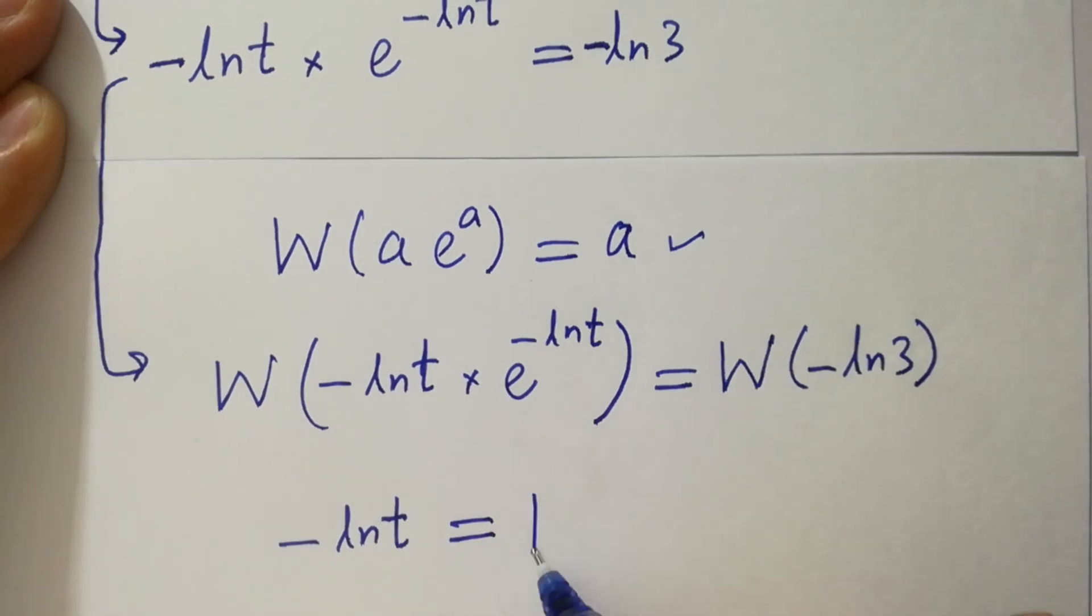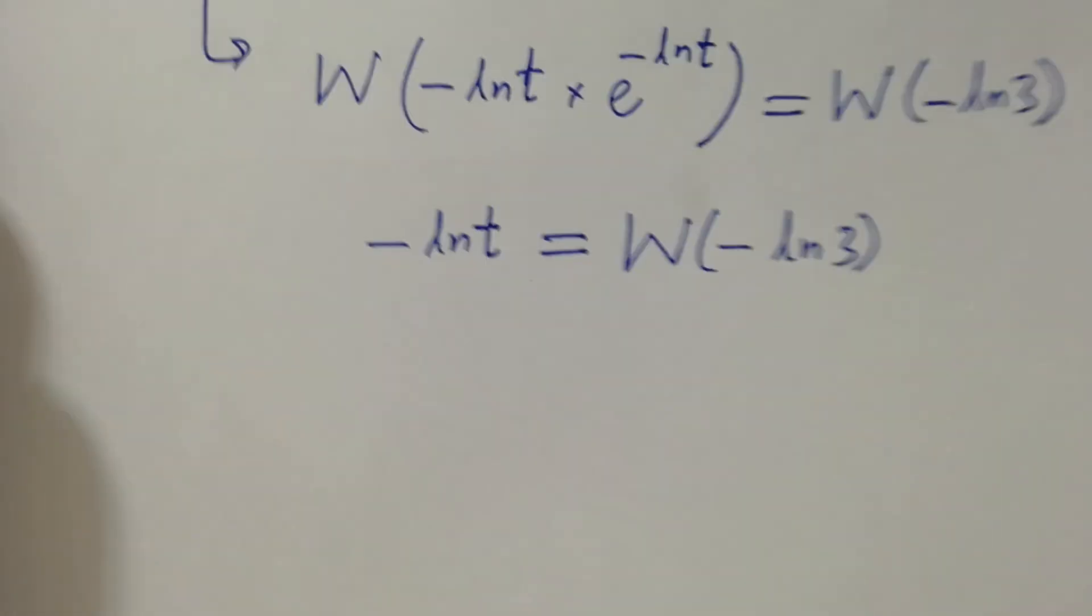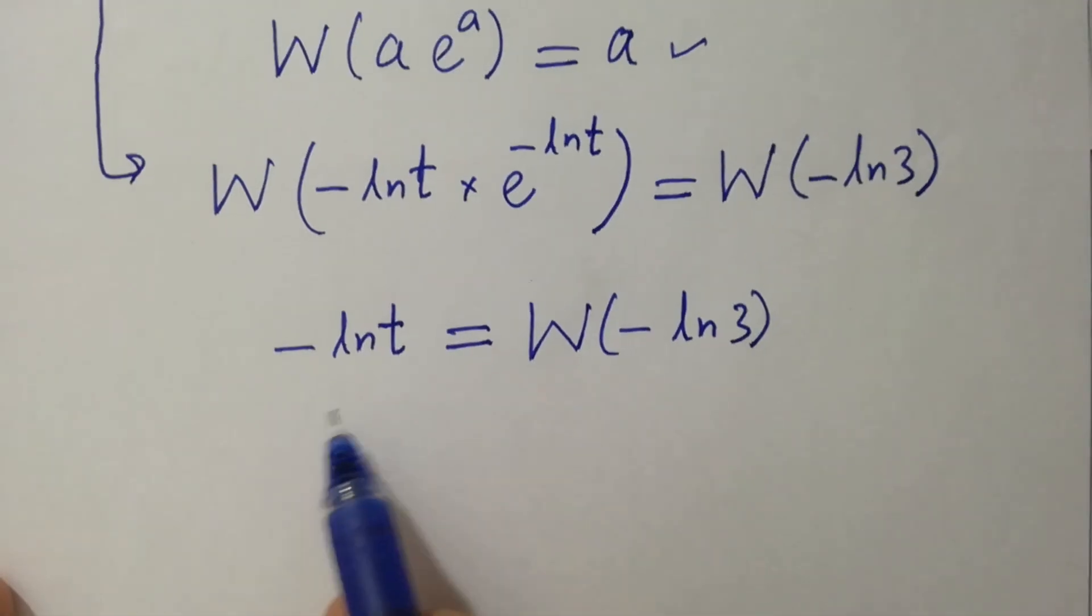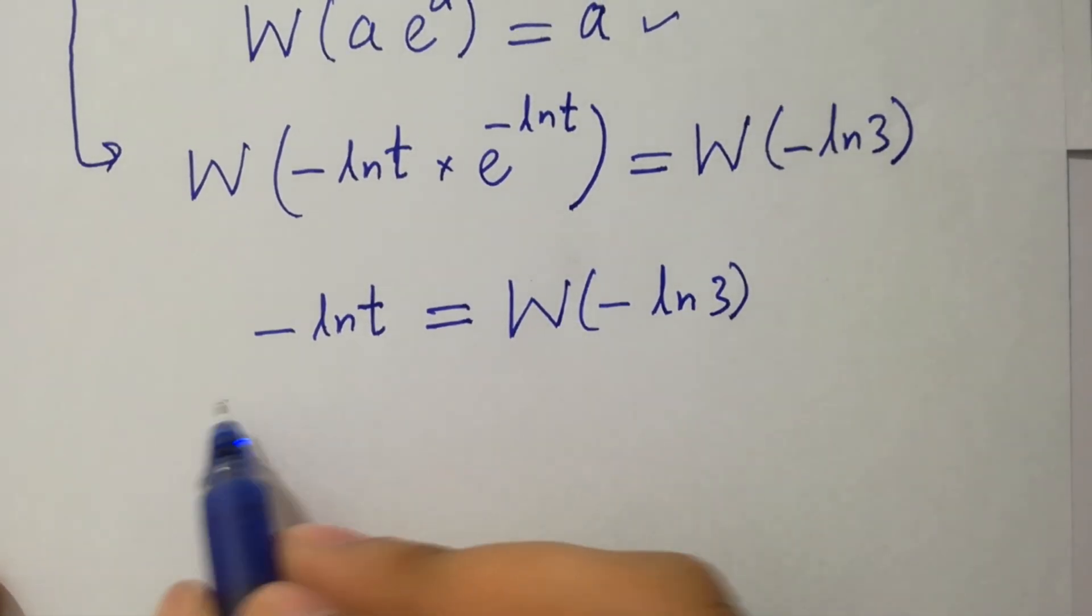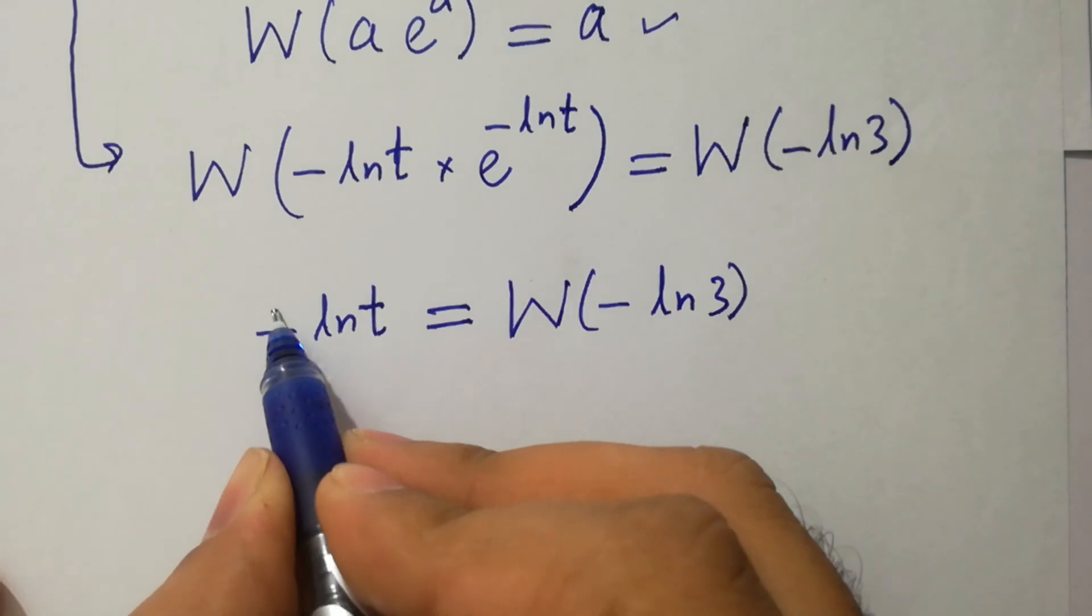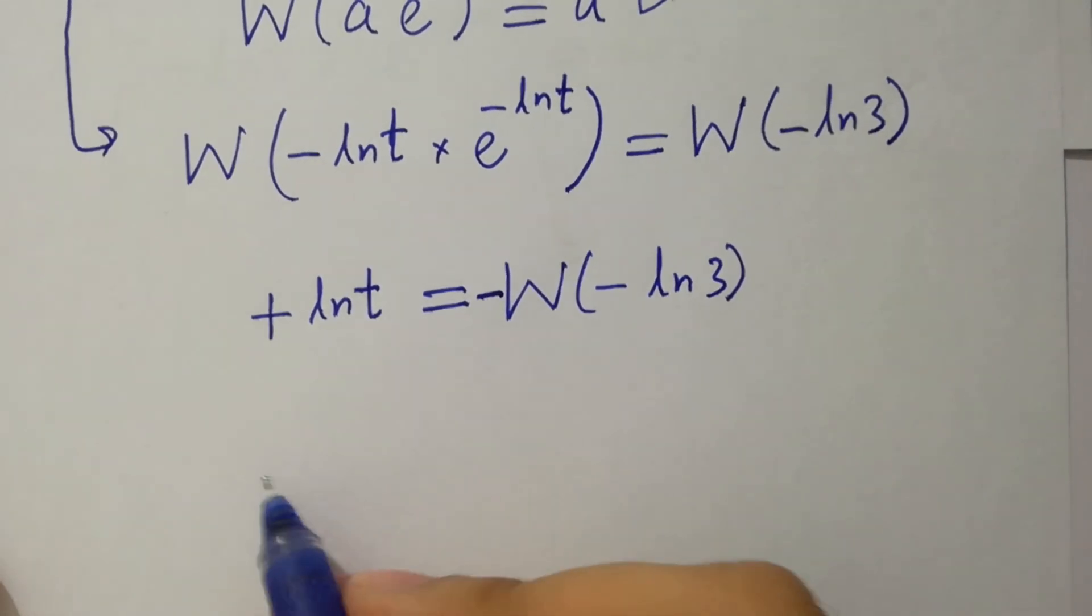Equal to w minus ln 3 as it is. In the next step multiply by minus on both sides.